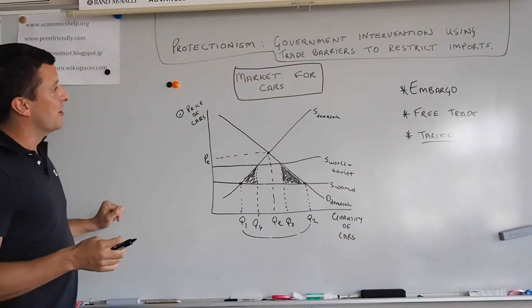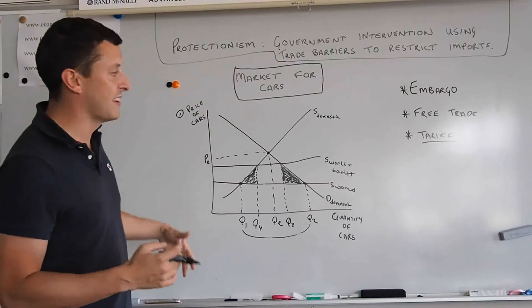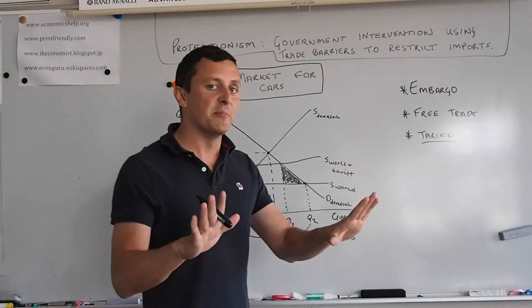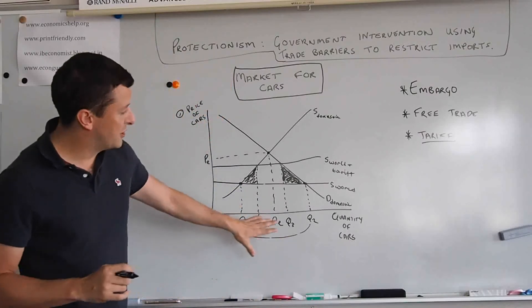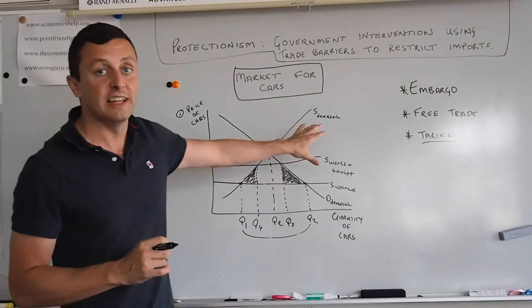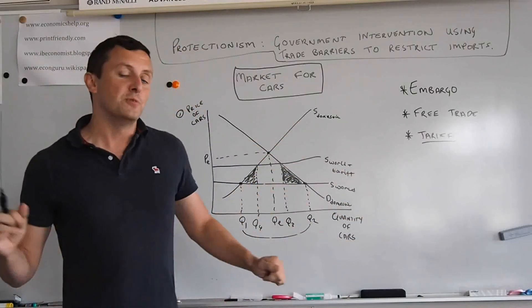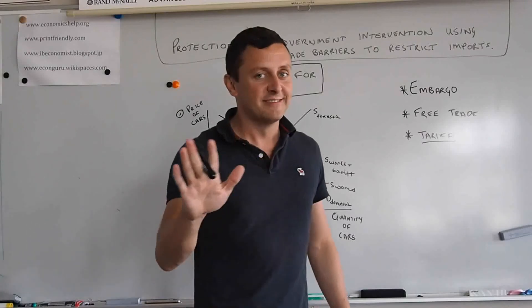So that was a quick explanation of protectionism, free trade, embargoes and tariffs. Hopefully the diagram is okay. If you just remember where all the queues go and where the supply world tariff goes and remember all of the labels, then you should be good to go. Well, thank you. Goodbye.